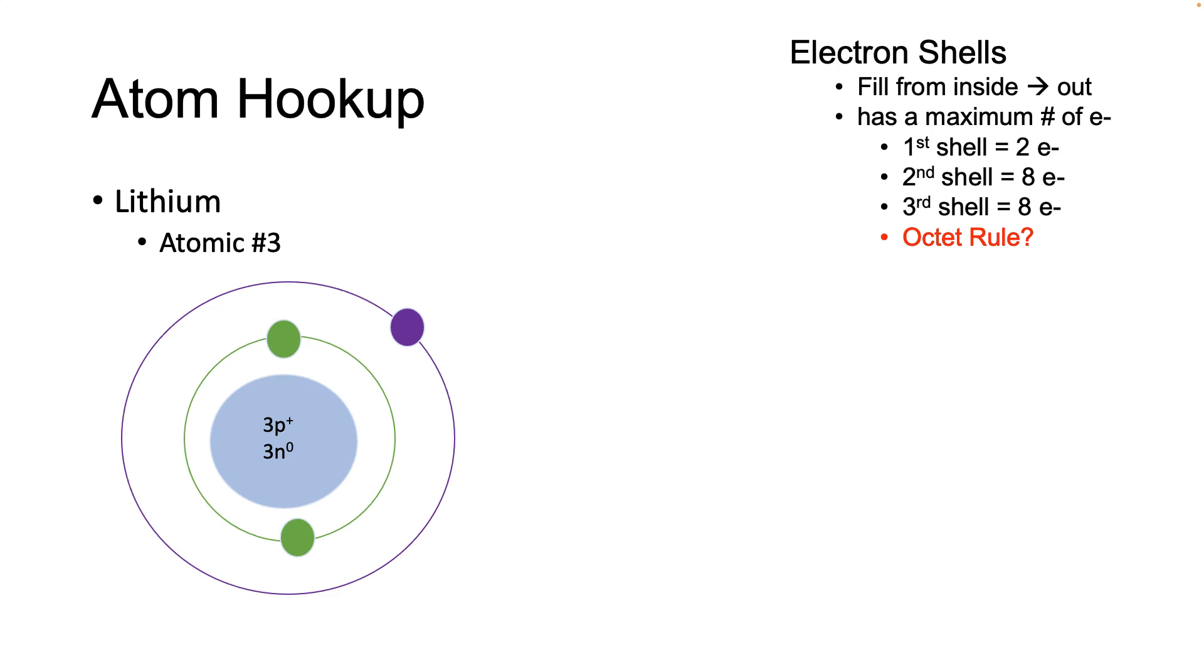And it does not fulfill the octet rule in any way. There's only one electron in the valence shell, that outer purple shell. And for this particular atom to be fulfilled, it would have to make a huge number of bonds, which is really unlikely. It's going to have to bond and be able to share seven more electrons. It's just unlikely to happen.